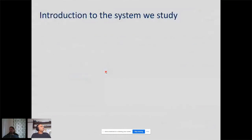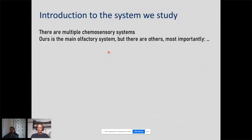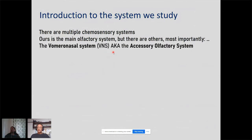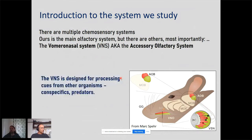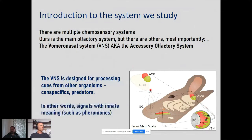I'll explain the system we study. It's a chemosensory system — there are multiple chemosensory systems in many animals. The main olfactory system is one, but there are others. The one we study is called the vomeronasal system, also known as the accessory olfactory system. Except humans and some apes, most vertebrates possess this system. We see it as largely designed for processing cues from other organisms — mainly conspecifics like other mice, but also from predators. It's a system supposed to process signals with innate meanings, such as pheromones.